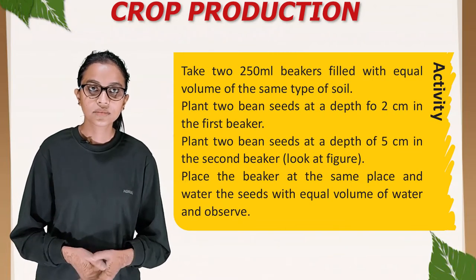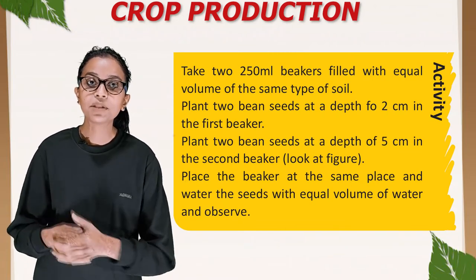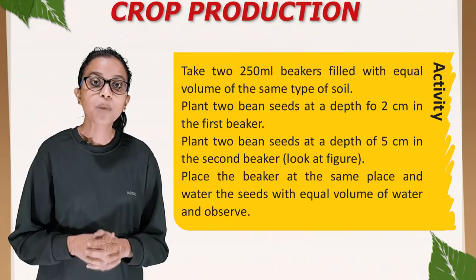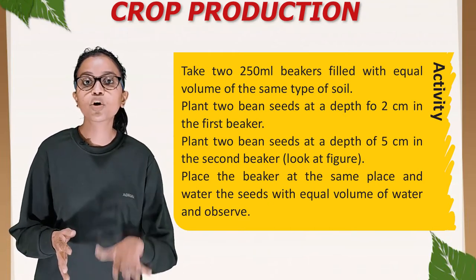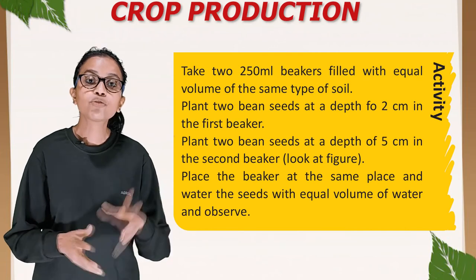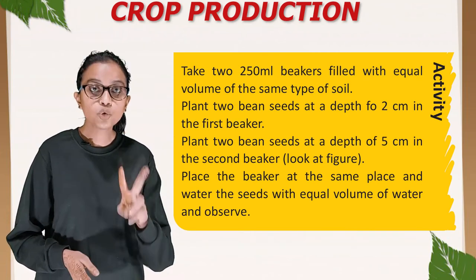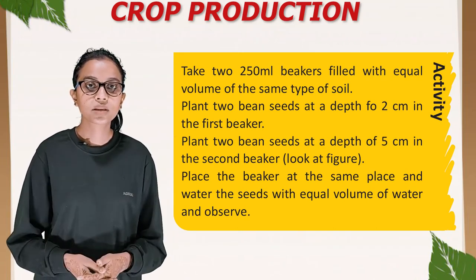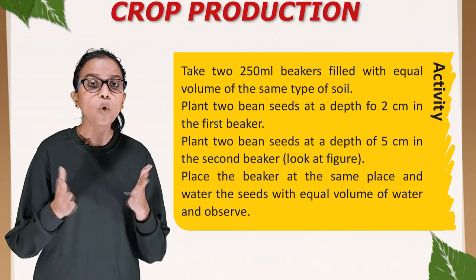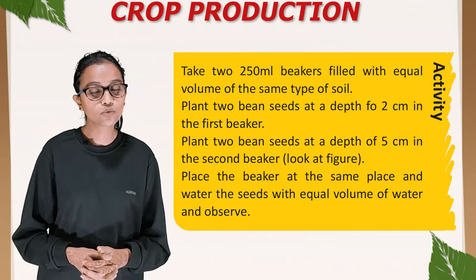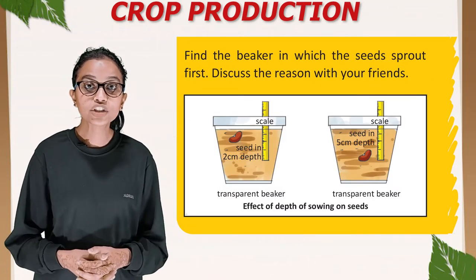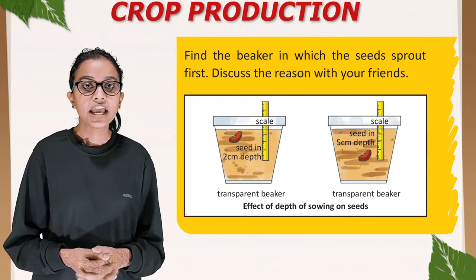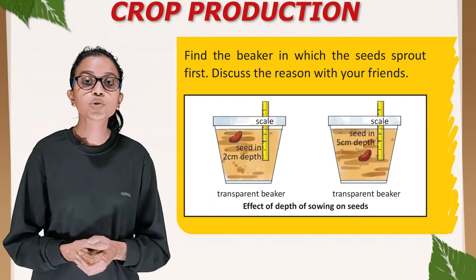Activity: Take two 250 ml beakers filled with equal volume of the same type of soil. Plant two bean seeds at a depth of 2 cm in the first beaker and two bean seeds at a depth of 5 cm in the second beaker. Place both beakers at the same location, water the seeds with equal volume of water, and observe. Find the beaker in which seeds sprout first and discuss the reason with your friends. This demonstrates the effects of depth of sowing on seeds.